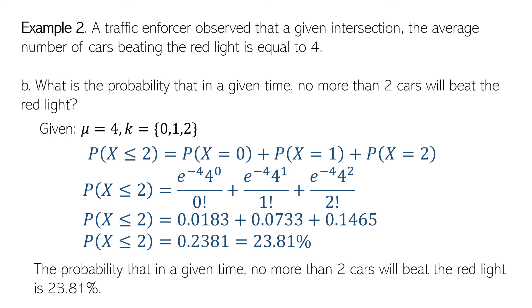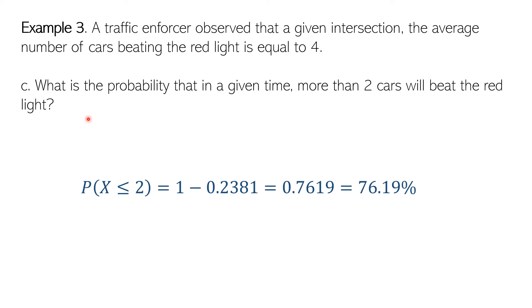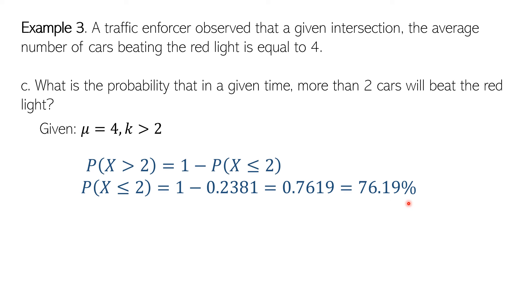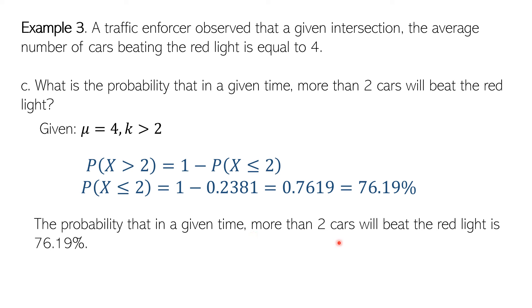In the third case: what is the probability that more than two cars will beat the red light? We already found that the probability of not more than two cars is 23.81% (or 0.2381). So we simply compute 1 minus 0.2381, which gives 76.19%. The probability that in a given time, more than two cars will beat the red light is very high at 76.19%.